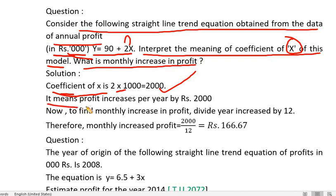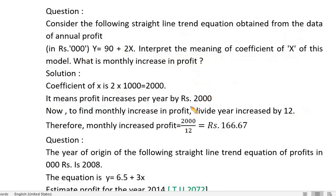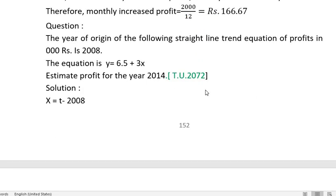To find the monthly increase in profit, we divide the annual increase of 2,000 by 12 months. This gives approximately 1,666, meaning the profit increases by approximately 1,666 per month.